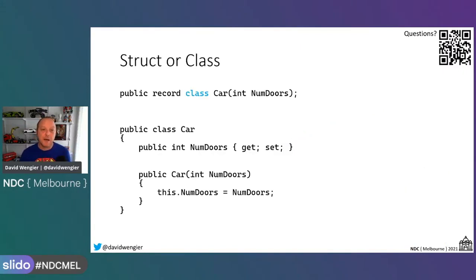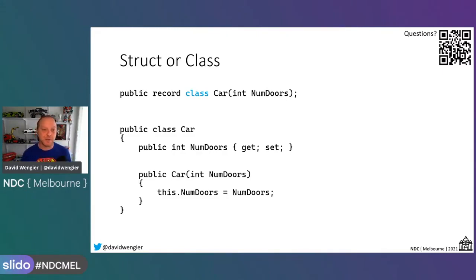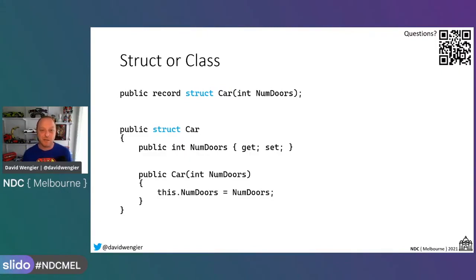I said that records was a class, and in C# 9 that's true. In C# 10 that's not true. What you can now do, using preview versions of VS and in future, is you can actually tell the compiler what type of thing you want the record to be. You can say 'public record class car' and that will generate a class. And if you can say class, well, you can also say struct, and that'll generate a struct. This is also why records aren't really anything — a record is just a class or a struct. It's not a new kind of type in .NET.